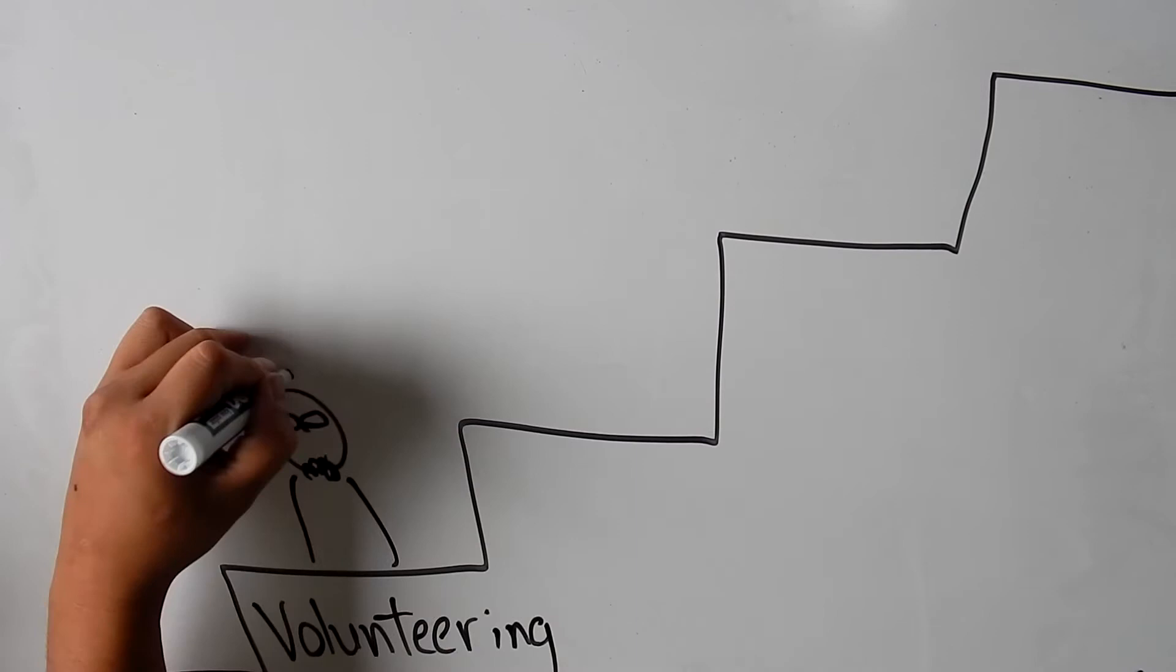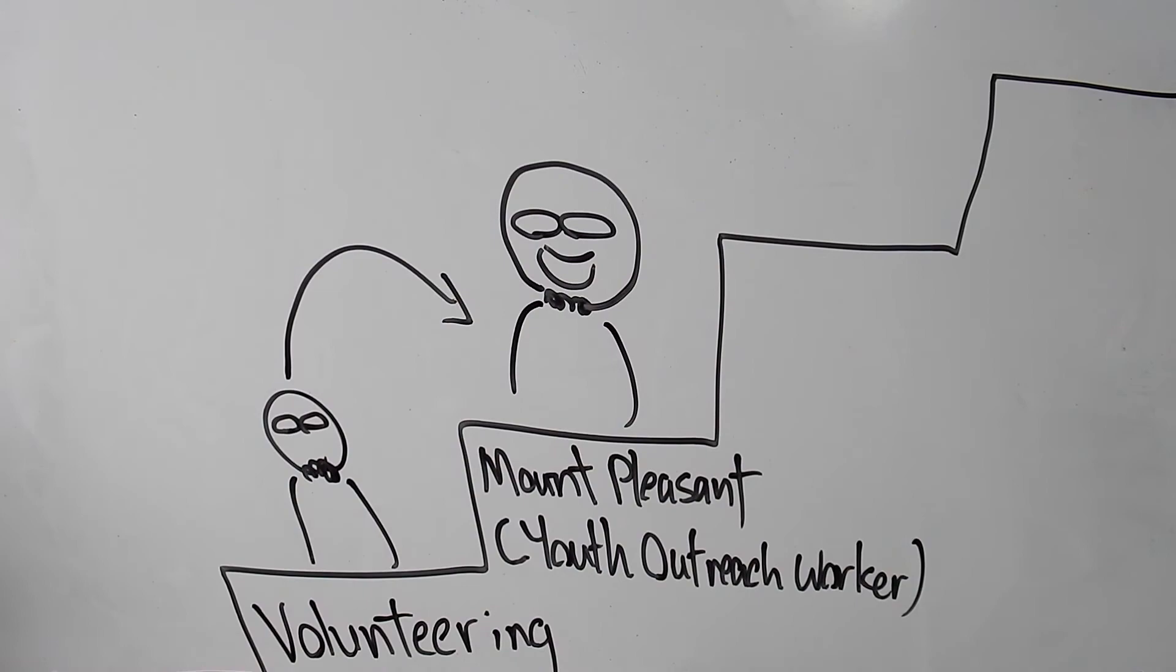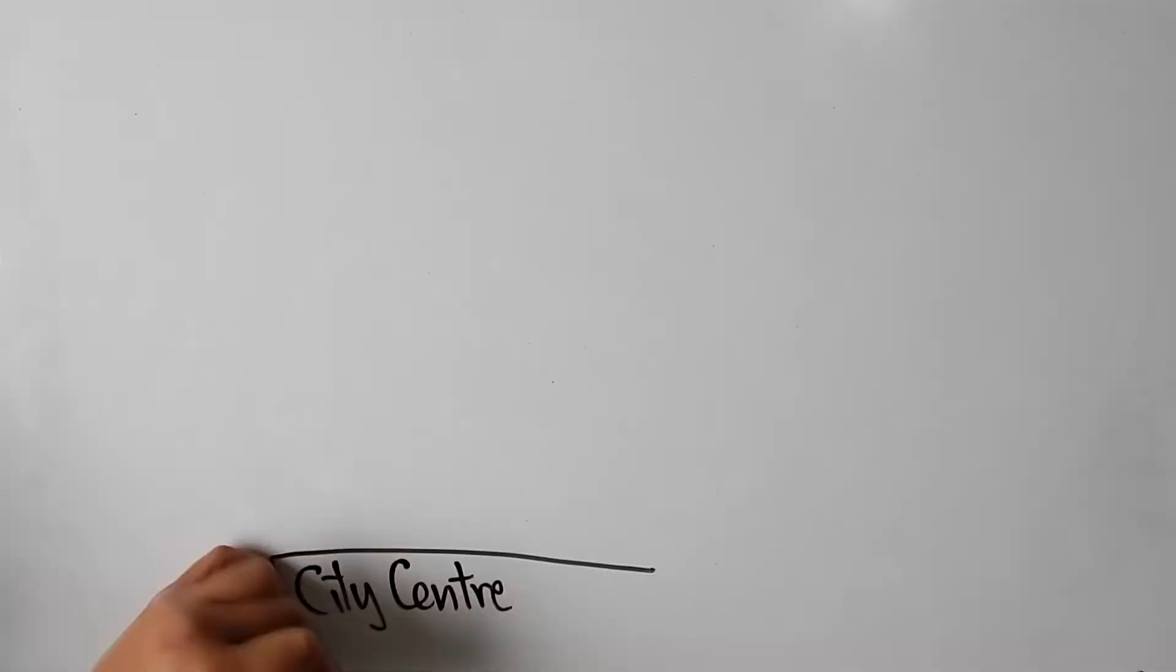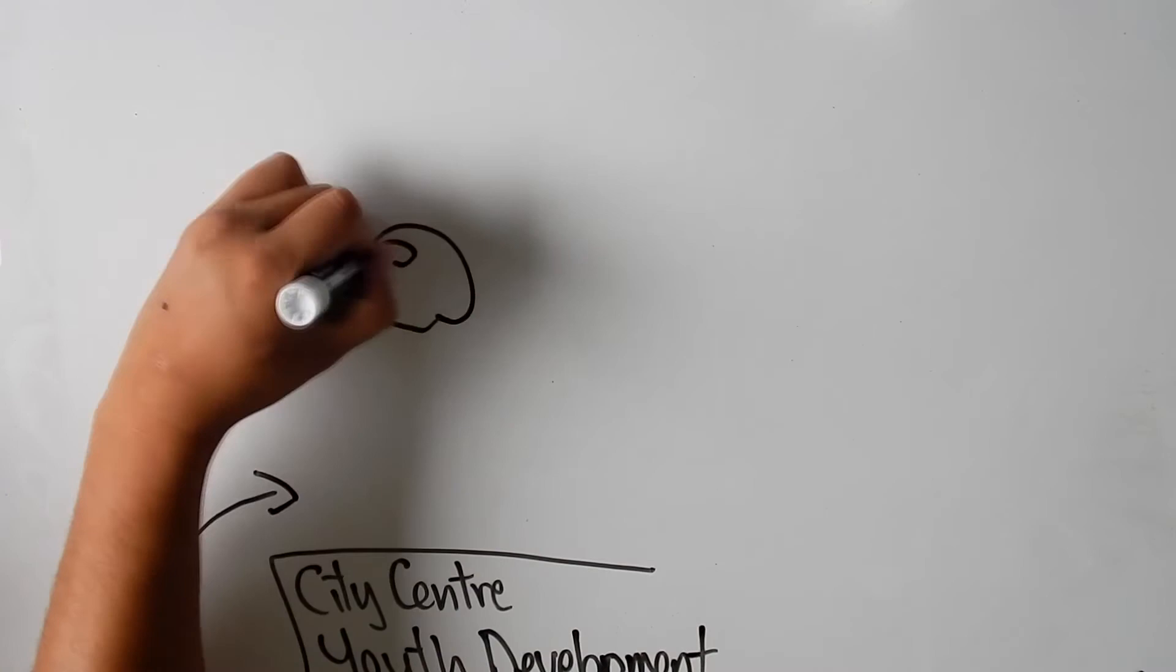With the experience, I was finally able to land a job at Mount Pleasant Neighborhood House as a youth outreach worker. Although the job only paid 20 hours a week, I loved my job so much I worked like a full-time staff. This job helped me obtain the child and youth activities worker position with Richmond Youth Services Agency. Eventually, thanks to all the experience I had, I was hired as a youth development coordinator at Richmond City Center Community Association.